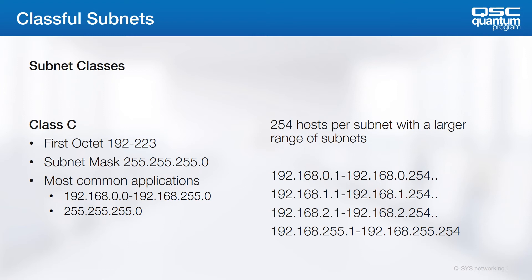Note that the IP ranges in the Class A, B, and C network definitions are never found on the internet. These ranges are specifically set aside for internal networks. Addresses of machines on the internet themselves are very carefully set aside and assigned to avoid catastrophe.